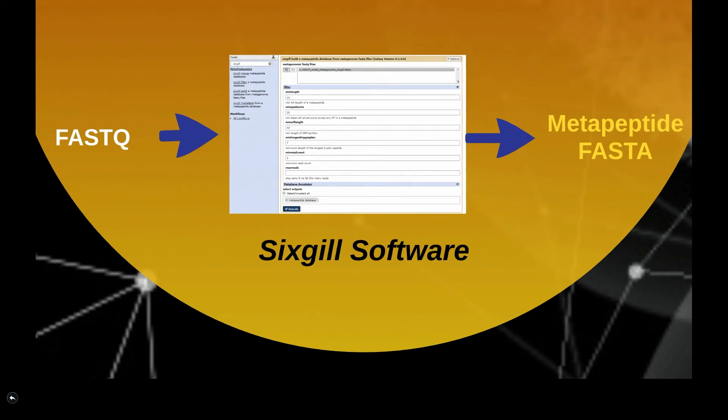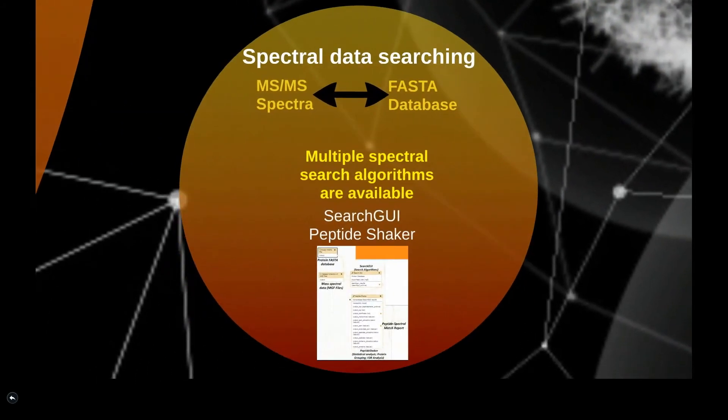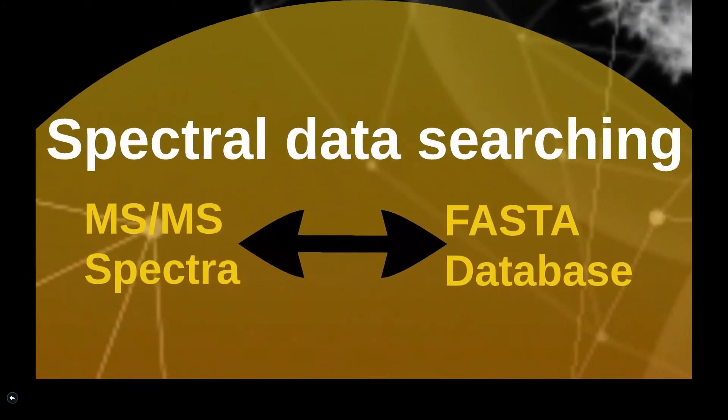Once the database is generated, spectra are matched against the protein sequences in the database. The spectral searching step involves matching MS/MS spectra to peptide sequences contained in protein sequence databases.